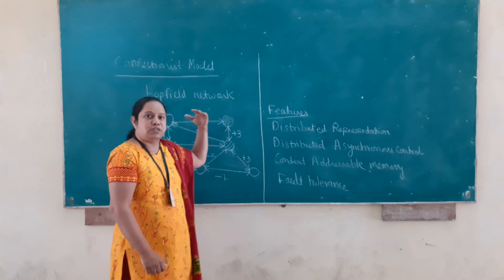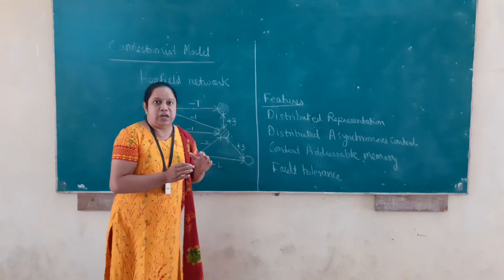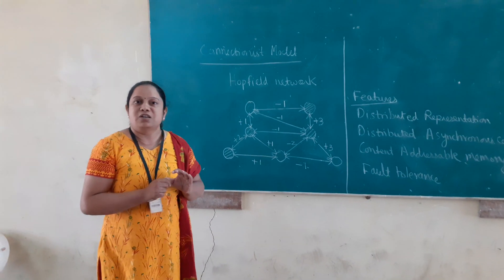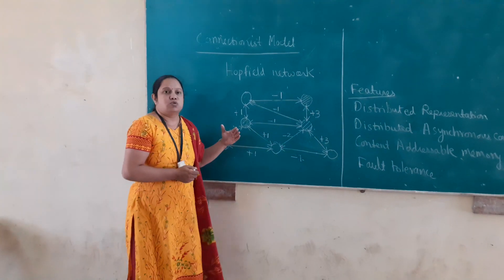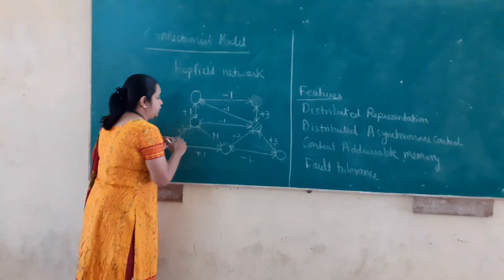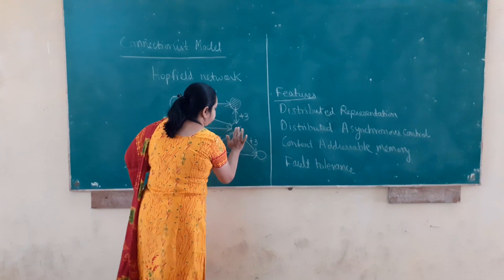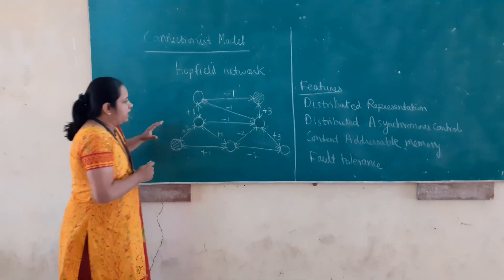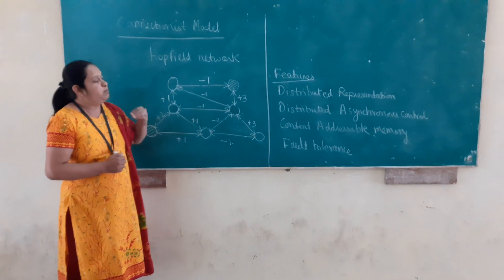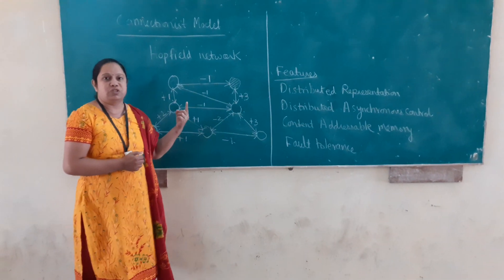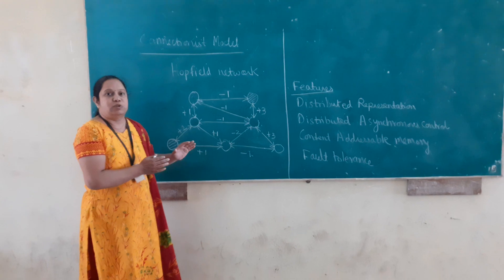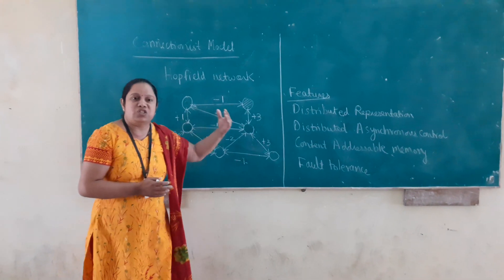It will continue to go on working in the same way until it reaches a state where no processing element is in a position to change another processing element. This particular state is called a stable state, and it is also called parallel relaxation. Now, when we consider one network, we can choose any of the processing elements and the parallel relaxation state of the network might be 2, 3, or 4. It may not necessarily be one stable state — there might be 4 states wherein different processing elements are active and it is a stable state.